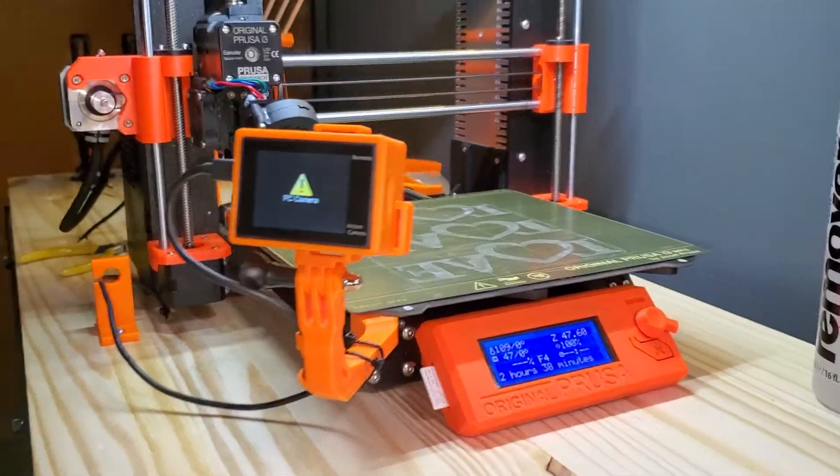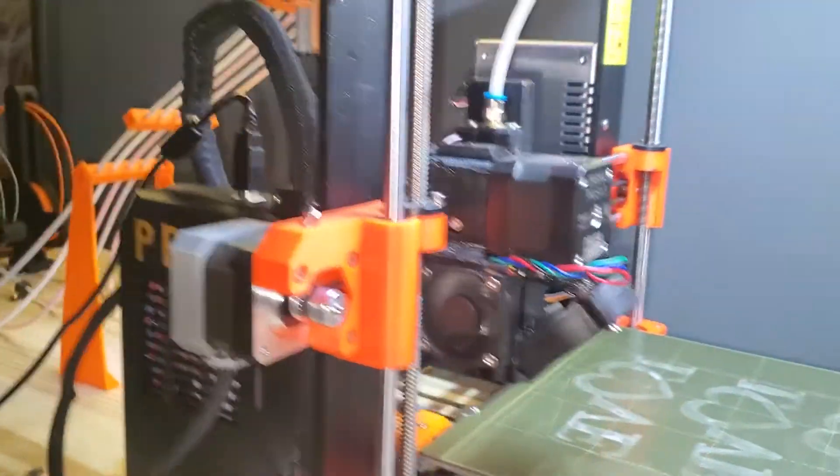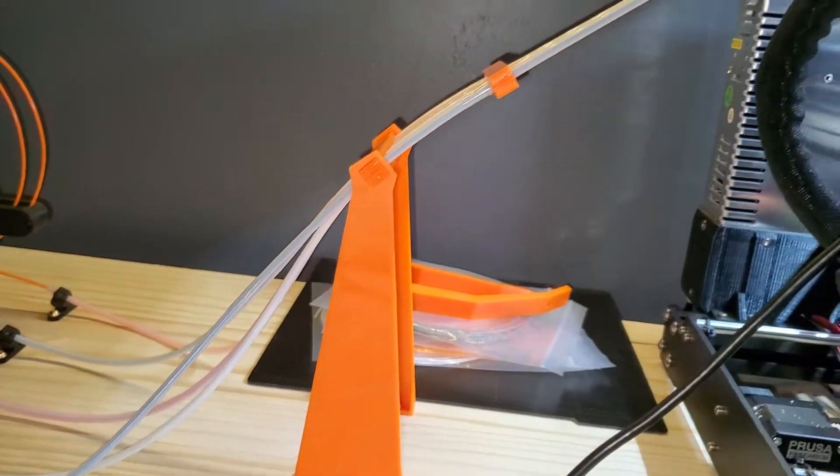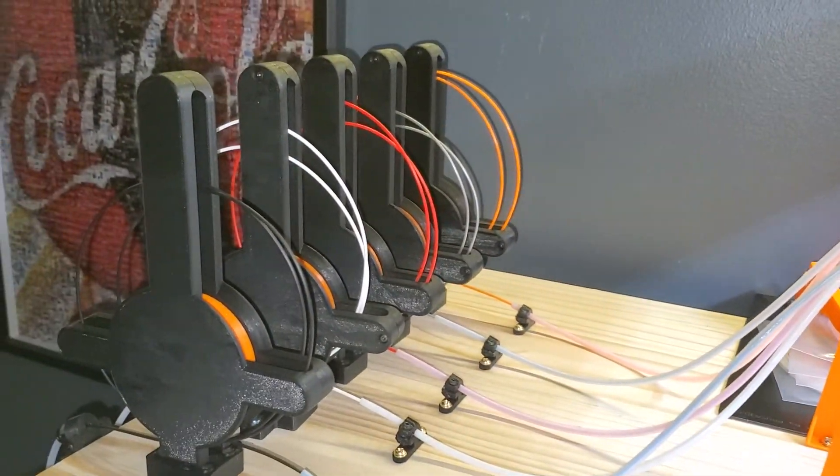But here it goes. There's my camera mounted to it. And then going back here, I have the MMU2. I printed that to elevate those and keep them out of the way. And then it goes back to five filament buffers.